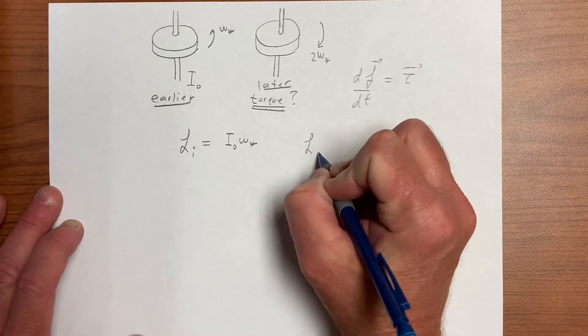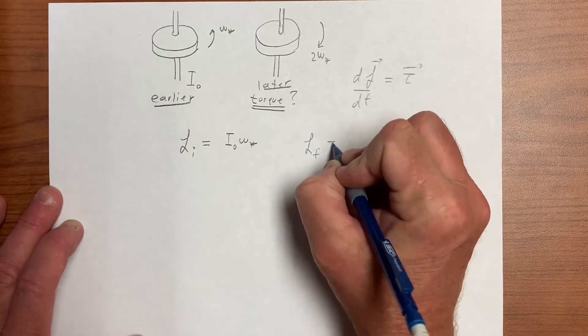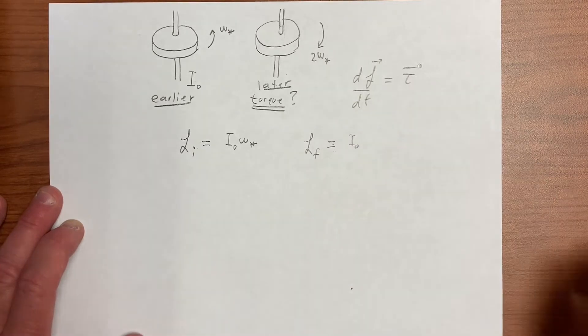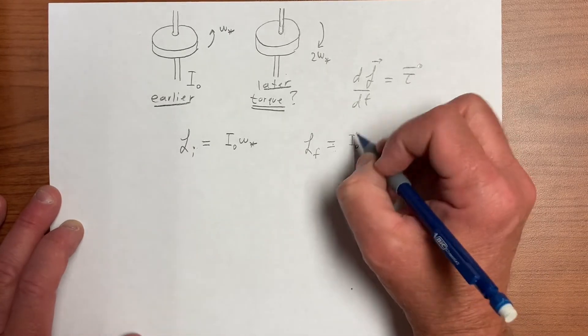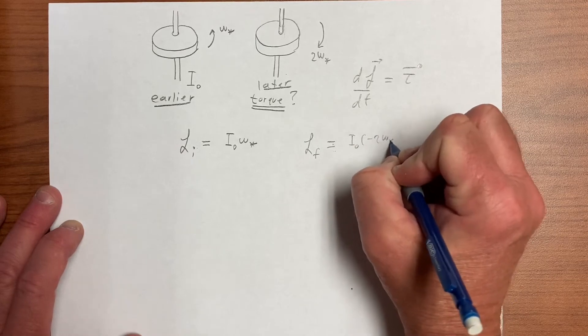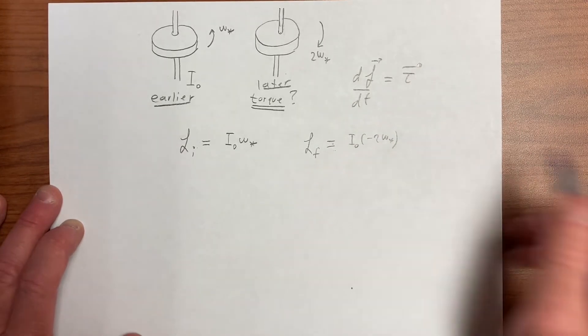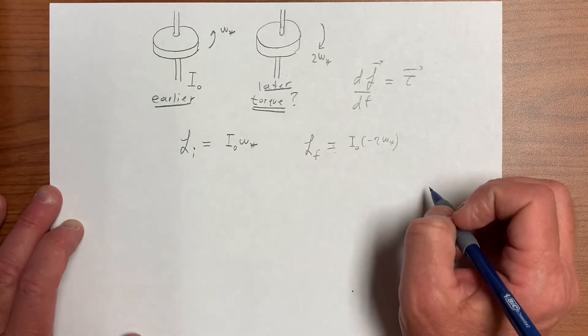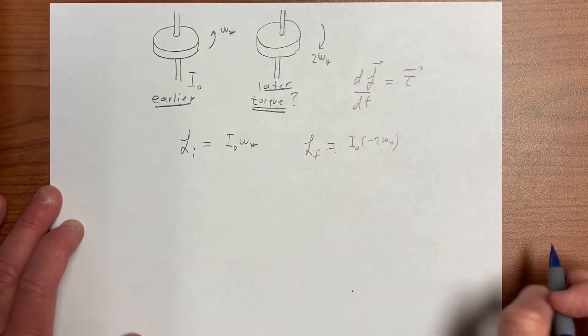And then we have a final angular momentum about the center which is I naught times minus 2 omega star because it's clockwise, and that's going to be negative.